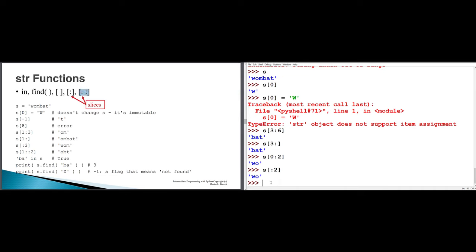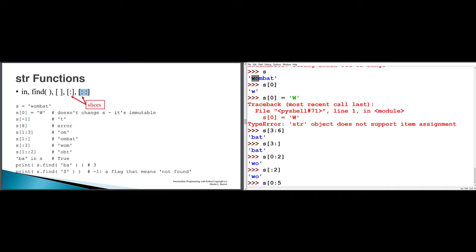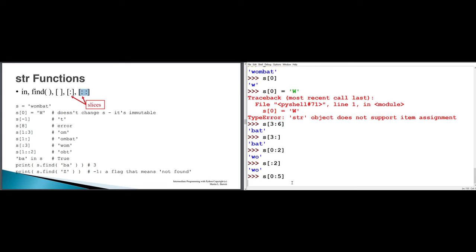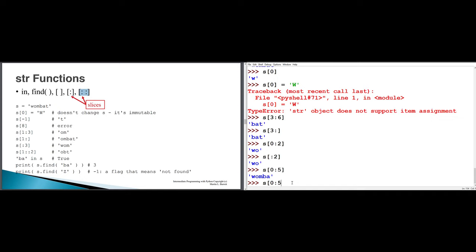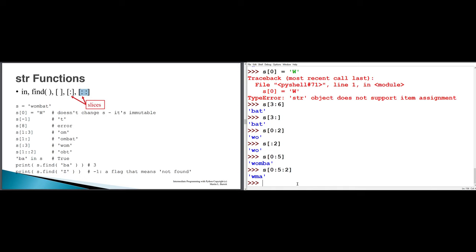You can use two colons, and the value after the second colon is a step size. So s[0:5:2] means give me every second character from 'wamba' — that gives 'wma'. wma is the acronym for something; in Minnesota that's a wildlife management area.